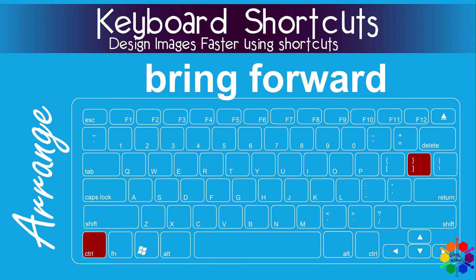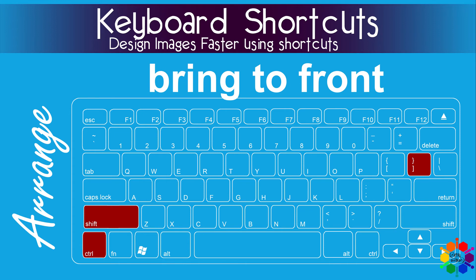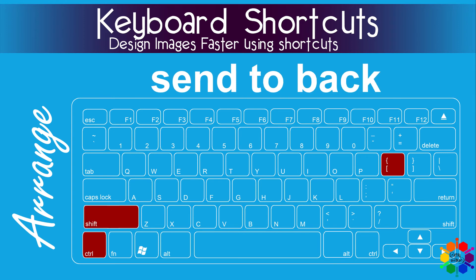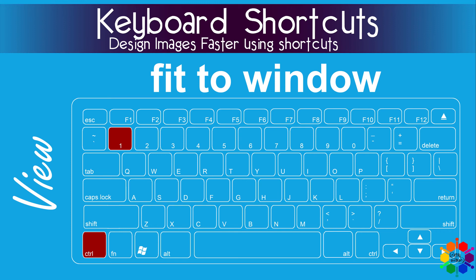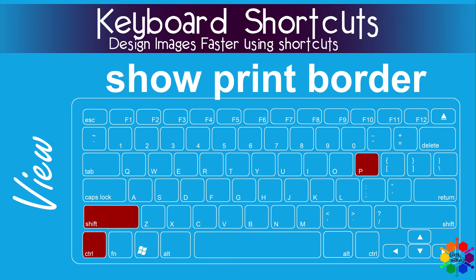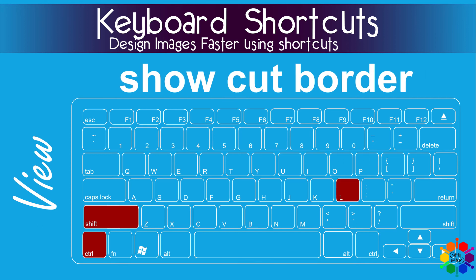The Arrange menu. Bring forward: Ctrl and the left square bracket. Bring to front: Ctrl Shift and the left square bracket. Send to back: Ctrl Shift and the right square bracket. The View menu. Fit to window: Ctrl 1. Show rulers: Ctrl R. Show print border: Ctrl Shift P. Show cut border: Ctrl Shift L.